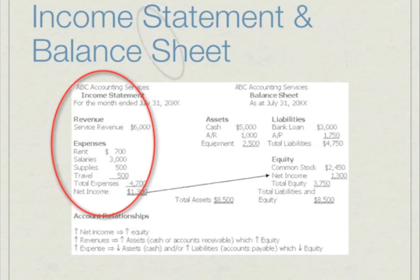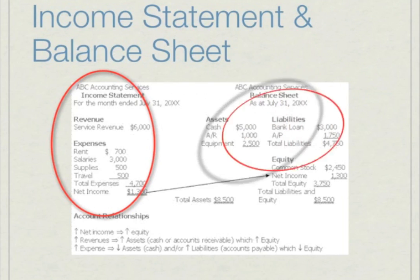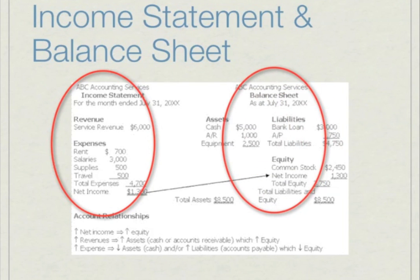On the right-hand side we have a balance sheet, which has an asset section, a liability section, and an equity section. We calculate the total assets by adding up the total values in each account — total assets is 8,500 (5,000 plus 1,000 plus 2,500). We do the same for the liabilities accounts, which gives us 4,750. Underneath liabilities, the equity section represents the owner's claim of the business — the money invested as well as the money made.